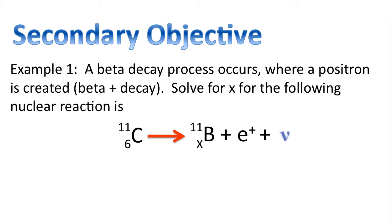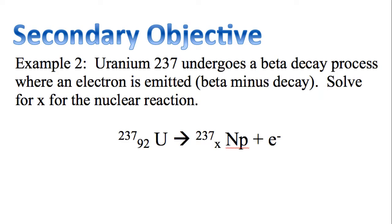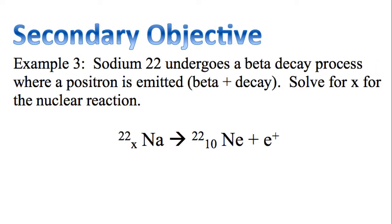We'll also be looking at common word problems. Example 1: a beta decay process occurs where a positron is created. Solve for X for the following nuclear reaction. We'll also look at example 2 and example 3.